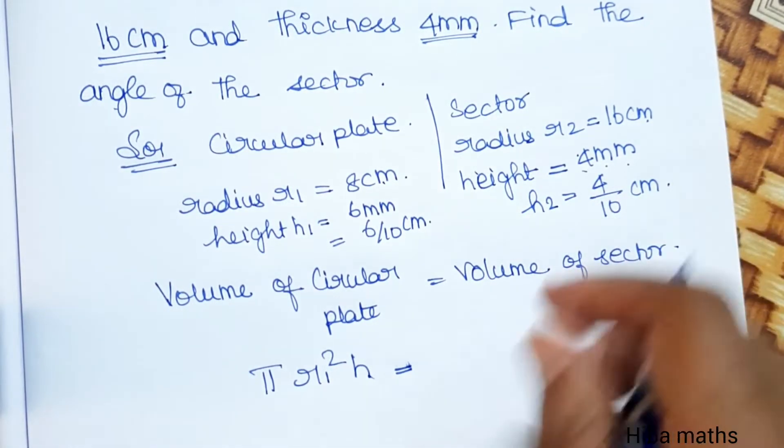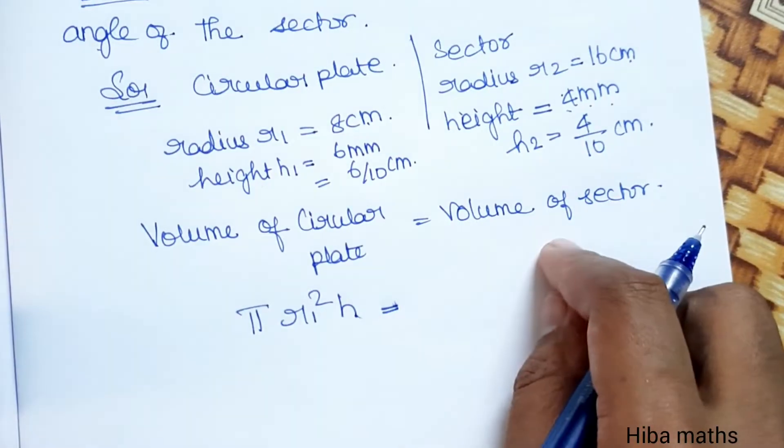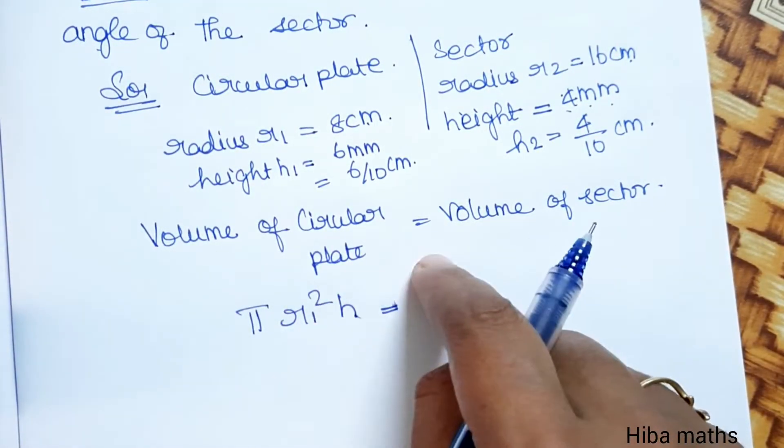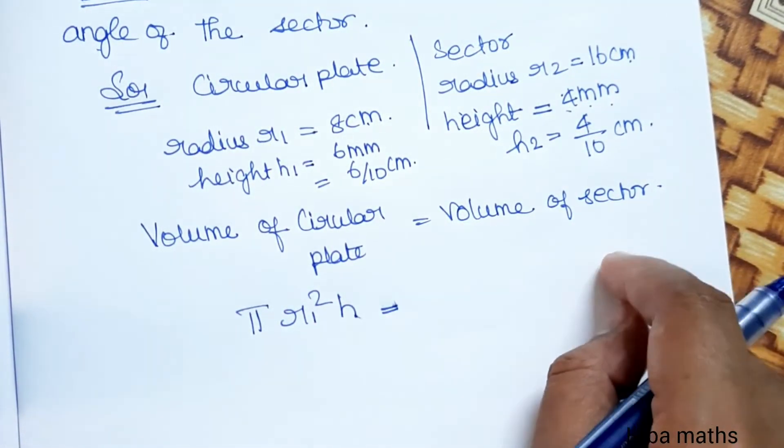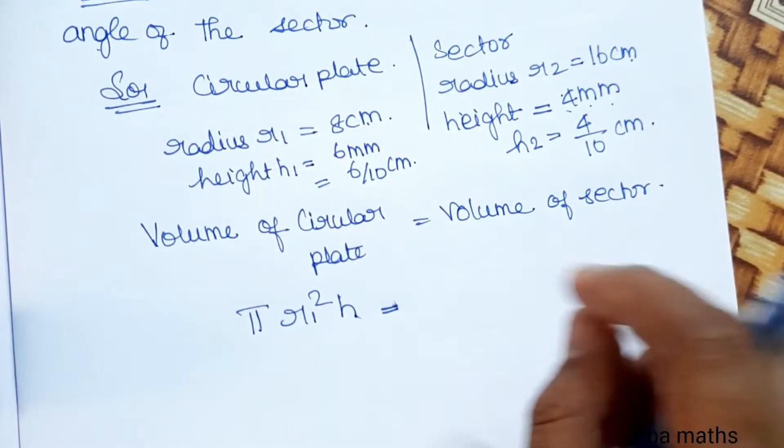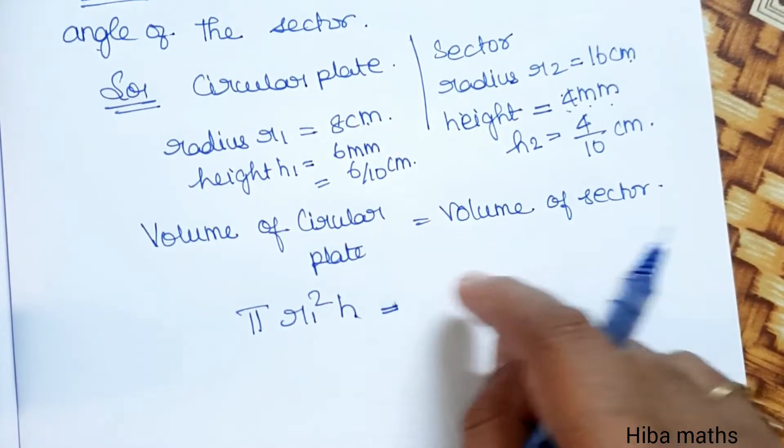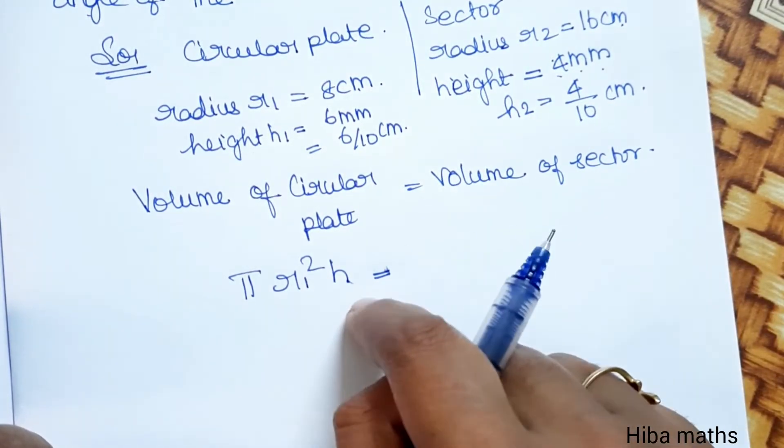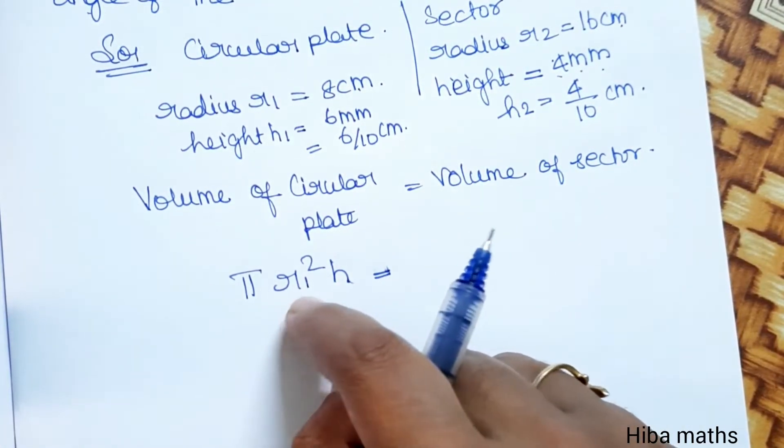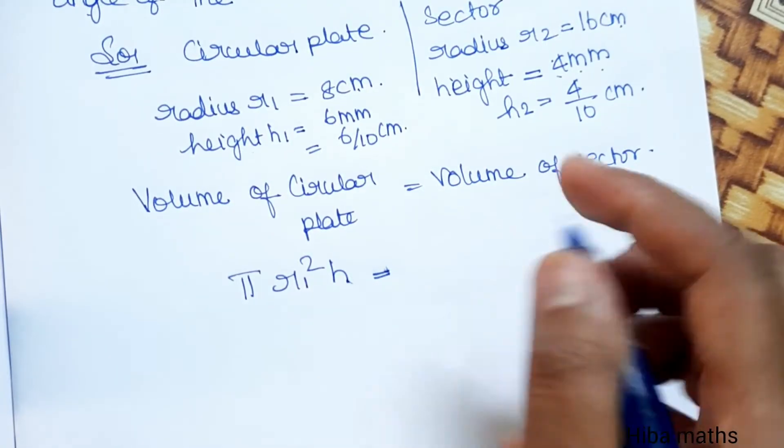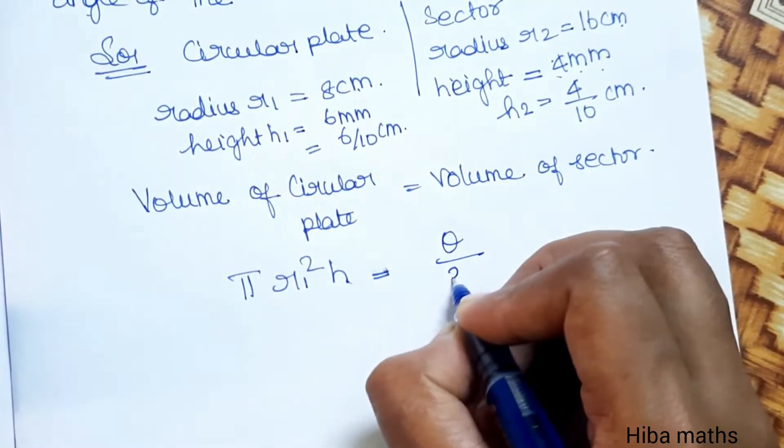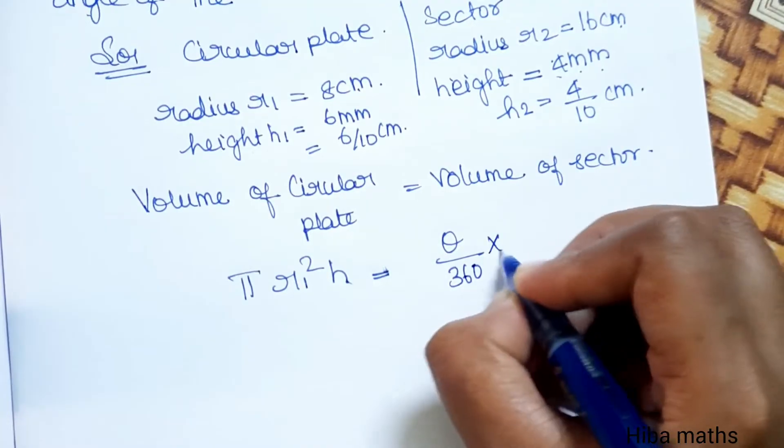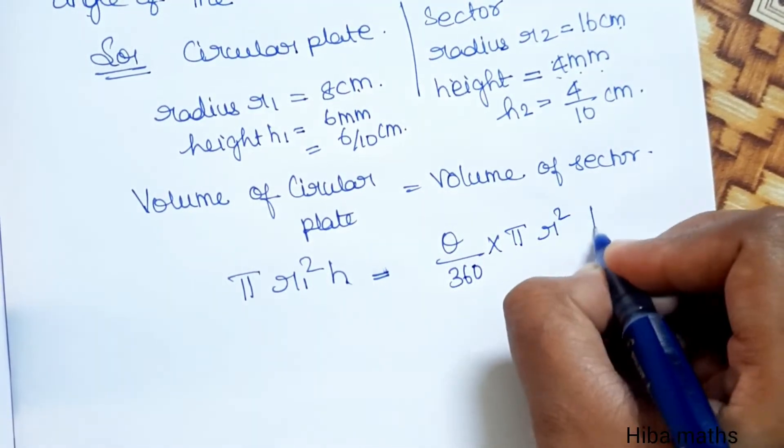Volume of circular plate equals volume of sector. The formula for volume is π r² h.